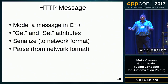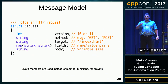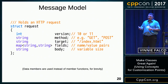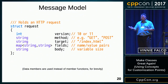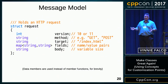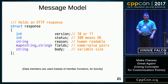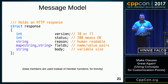Here's a first stab at a request container. There's a version, a couple of strings for method and target, and a map of strings mapping field names to values. The body is a standard string — string can represent binary data, can hold nulls, and a zero-length string indicates no body. Similarly, a response is very similar but has status and reason instead of method and target.